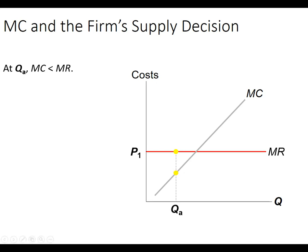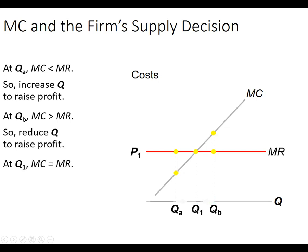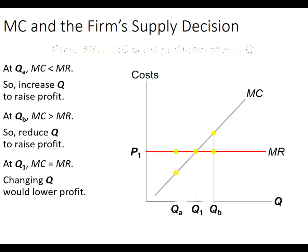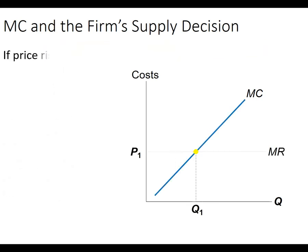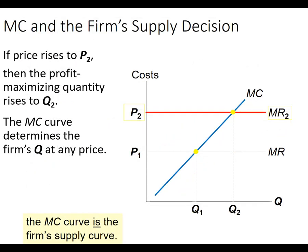If I'm at QA, this means I'm not making as much profit as I could be — I need to increase production. And if I'm at QB, it means that these units cost more than I'm selling them for, so I should decrease production and get to Q1. That's what I should be after — that's profit maximization. If the price goes up, then I can increase out here to Q2, and the marginal cost curve is essentially the firm's supply curve. That's how they make decisions at the margin.